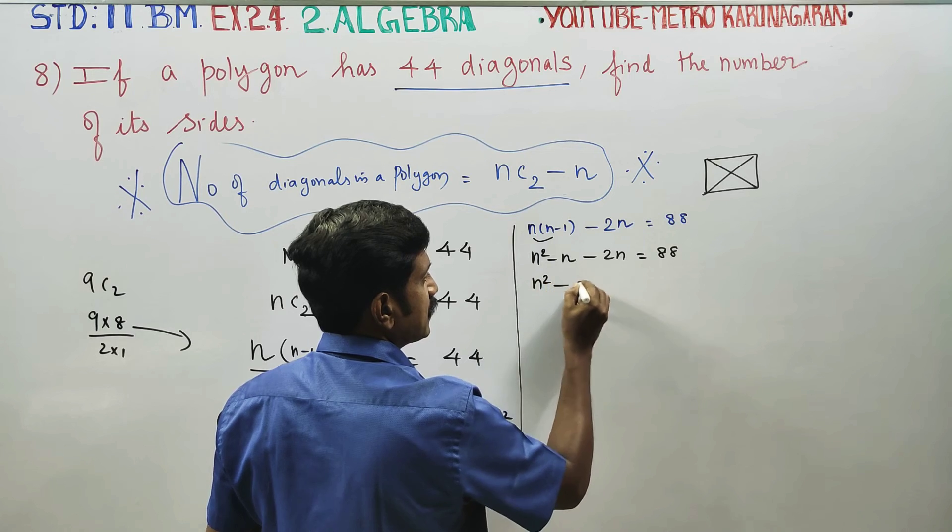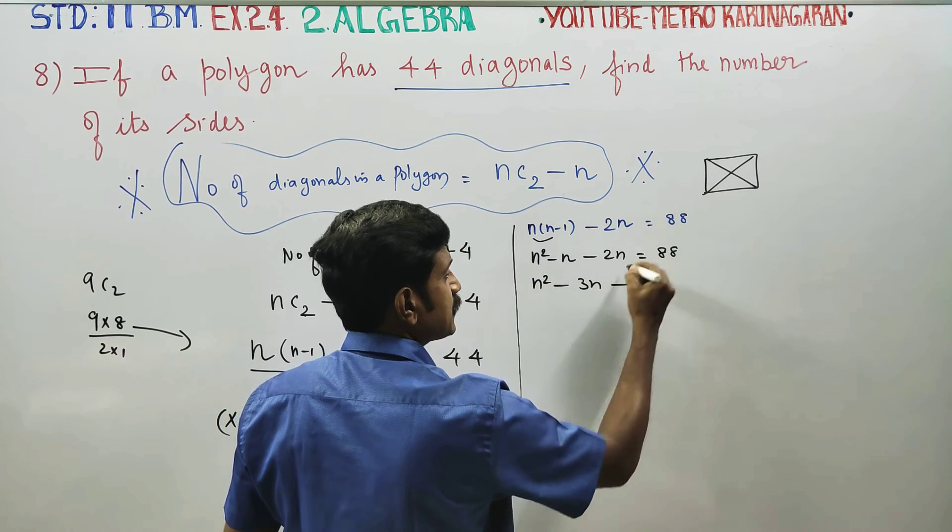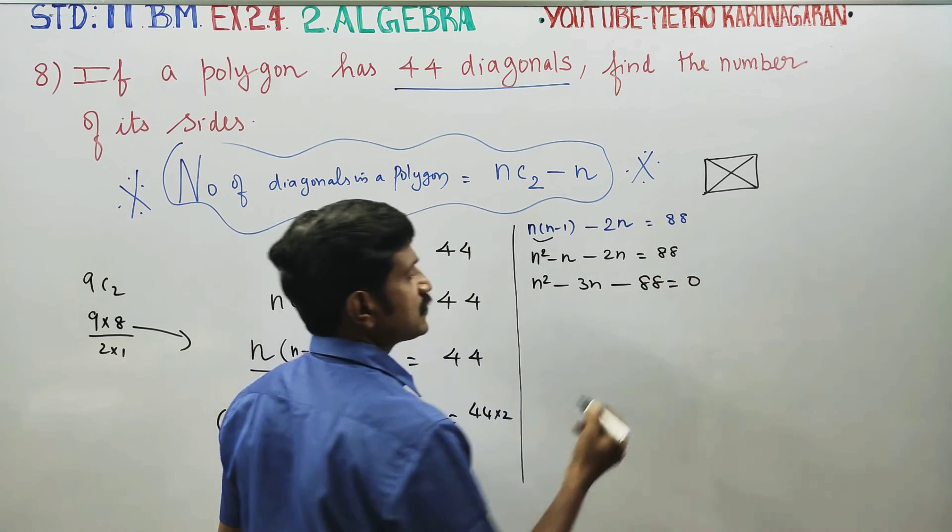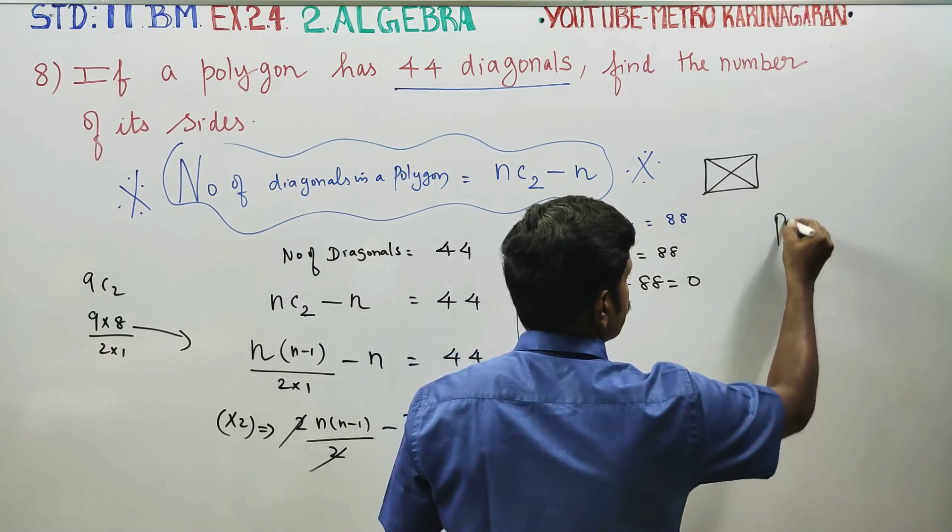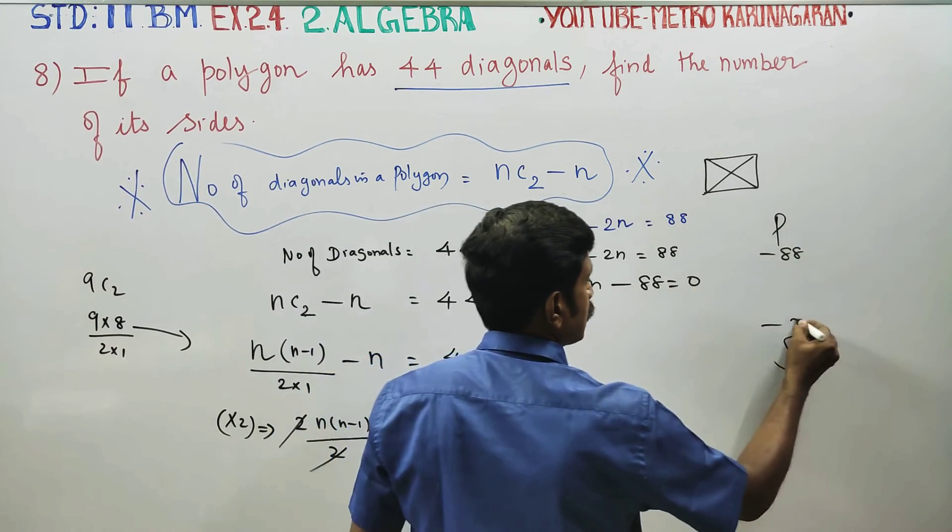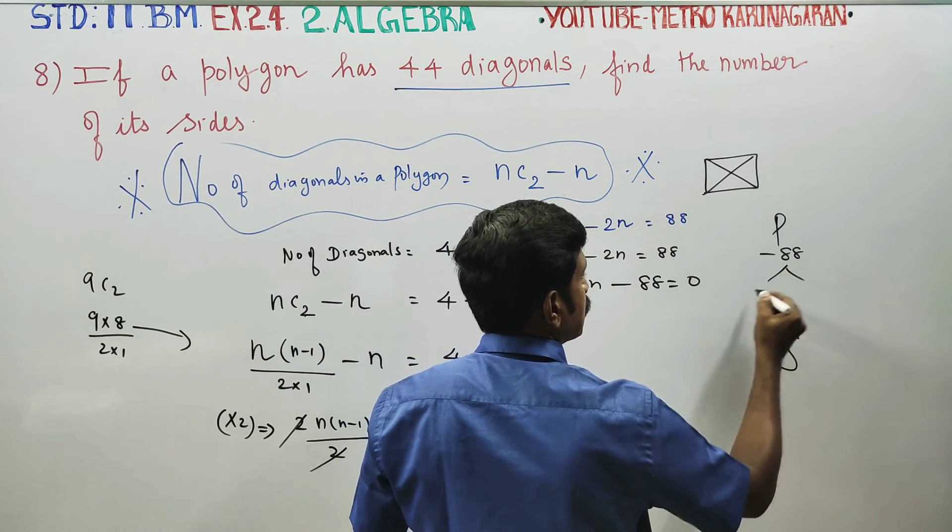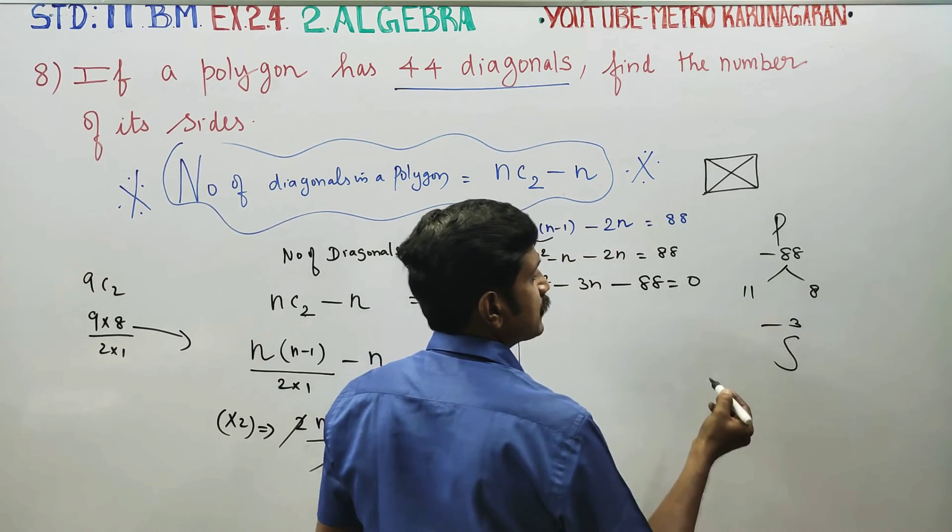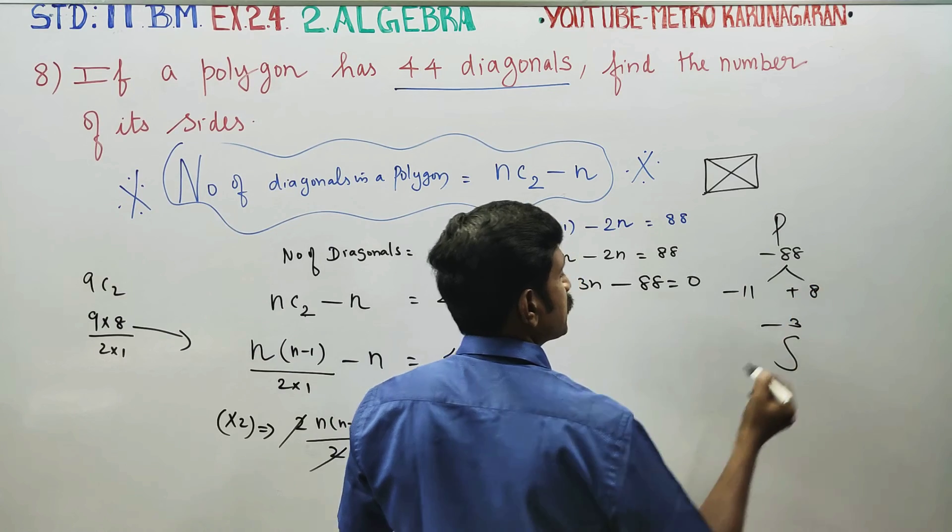n² - 3n - 88 is equal to 0. The product sum: break 88 into minus 88. With minus 3, 11 times 8 is equal to 88.